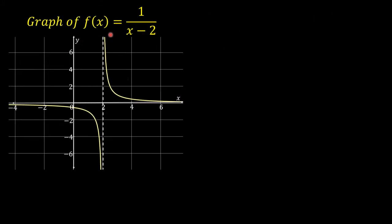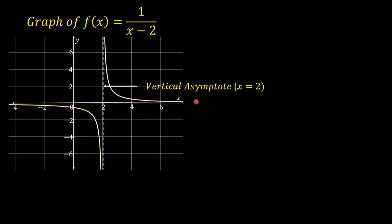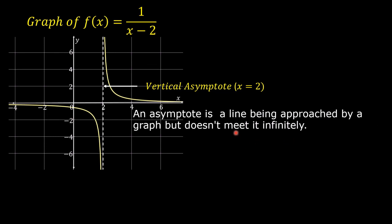This is the graph of f of x equals 1 over x minus 2. We can see from the graph that as the value of x approaches 2 from the left, the graph moves downward towards negative infinity and does not touch the vertical line. As the value of x approaches 2 from the right, the graph moves upward towards positive infinity and does not touch the vertical line. This vertical line is called the vertical asymptote, and it is the line x equals 2. An asymptote is a line being approached by a graph but never meeting it.